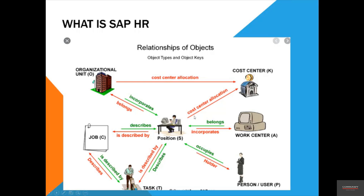The position needs to have a cost center allocation. For example, if someone works in the marketing department, marketing has a cost center. Different departments have different cost centers so costs can be split and tracked — marketing may spend more than IT. This allows budget control. The position also belongs to an organization unit, and the org unit can have its own cost center allocation, creating a hierarchy.